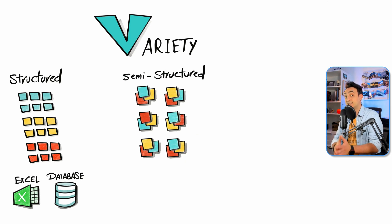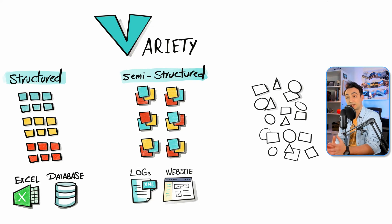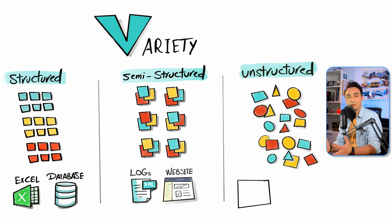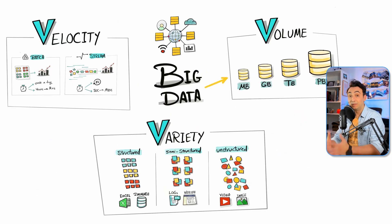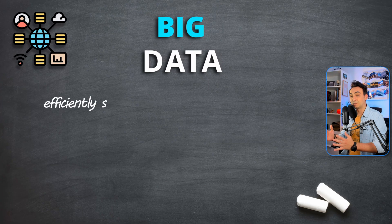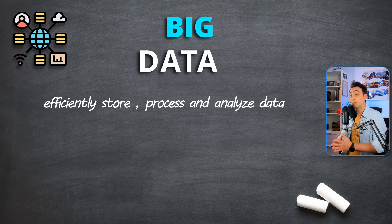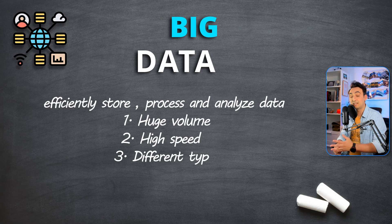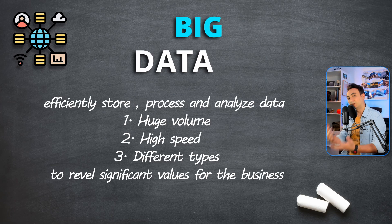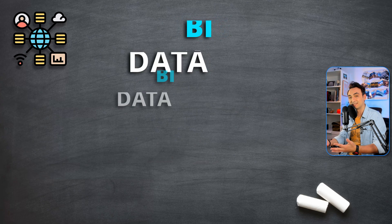The third V is Variety. In traditional systems, most data types could be captured in structured tables like databases or spreadsheets. But in the big data world, data often comes in semi-structured formats — for example, server logs in XML or website data — or in unstructured formats like videos, audio, images, and free text. So in big data, we have to deal not only with structured data but also with semi-structured and unstructured data.